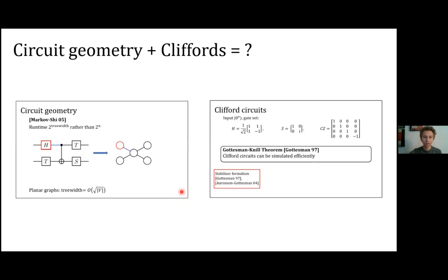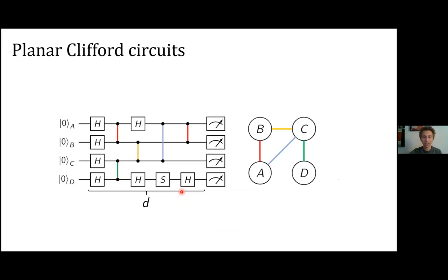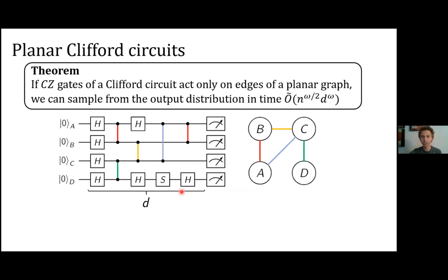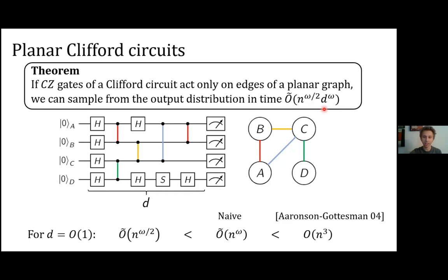Our first result: if you have a Clifford circuit in which the two-qubit gates act along the edges of a planar graph, you can sample from the output distribution in time n-to-the-omega-over-2, plus a cost depending on depth. For constant-depth circuits, this is a quadratic improvement over n-to-the-omega, which itself was a small polynomial improvement over previous best results. We actually spend the bulk of our paper on a related problem to which we reduce this one.